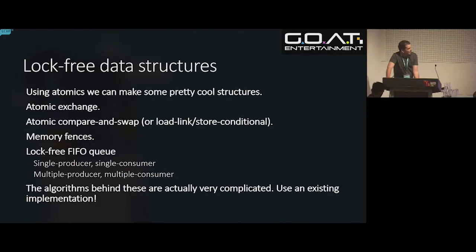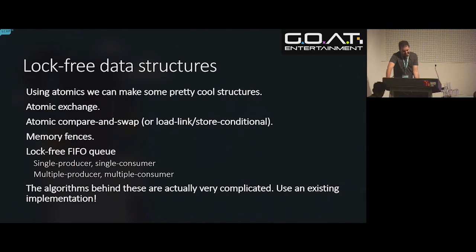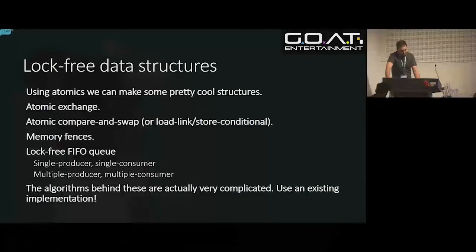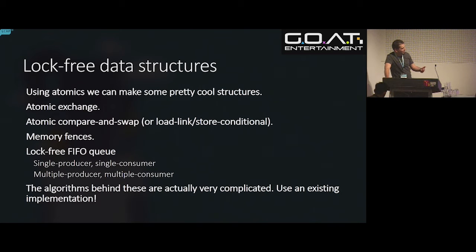Lock-free queues are really complicated. There was a talk at GCAP in 2007 on lock-free data structures for the Xbox 360 — I ran home and made a lock-free queue. It worked for a day, then broke when I wrote a unit test. I fixed those bugs, it passed for six months, then one day failed. It's very easy to get these lock-free algorithms wrong. If you're interested, it's fun to research and try to write one, but you should download an open-source one or use ones built into Microsoft's libraries. Most of them work on a transactional nature — a loop tries to do a task, compare-and-swap at the end tells you whether you succeeded, and if not, you do the loop again.